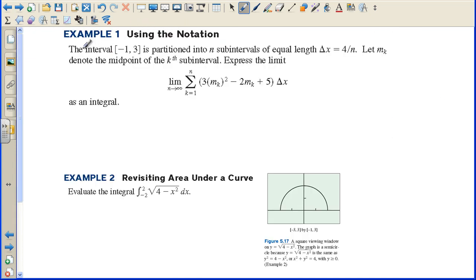Example 1, using the notation. The interval negative 1 to 3 is partitioned into N subintervals of equal length. Change in X equals 4 over N. Let M sub K denote the midpoint of the kth subinterval. Express the limit as an integral. So all of this right here becomes the elongated S. We're going from negative 1 to 3. M sub K is the X value we're plugging into the function. So the function is 3X squared minus 2X plus 5, and delta X becomes dX.